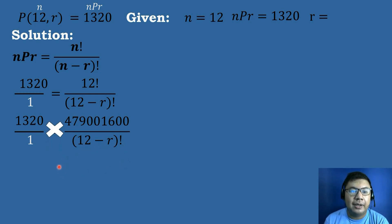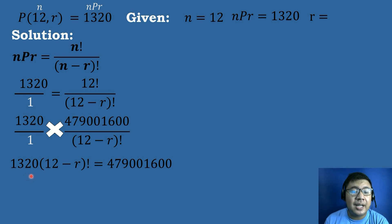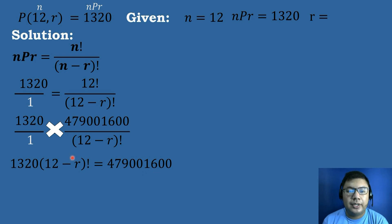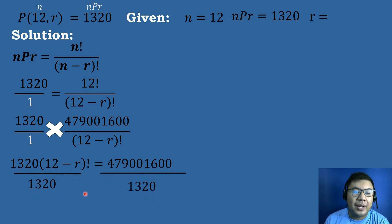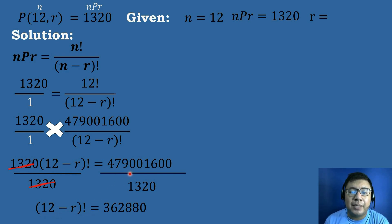Solving 12 factorial on the calculator gives 479,001,600. Cross multiplying: 1,320 times the quantity 12 minus R factorial equals 479,001,600 times 1, which equals 479,001,600. We then divide both sides by 1,320. The 1,320 cancels out, leaving the quantity 12 minus R factorial equals 479,001,600 divided by 1,320, which equals 362,880.